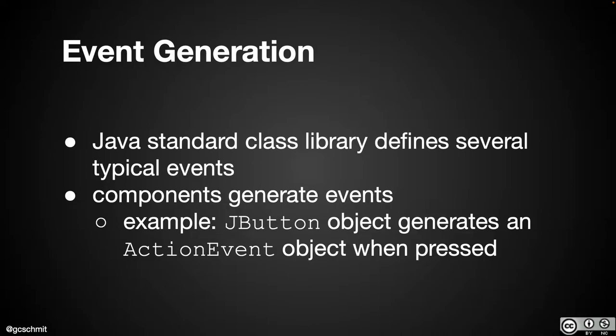The JButton class, which is part of the Java standard library and represents a button component, when the user clicks on it, the Java framework takes care of creating a new ActionEvent object. We simply interact with that event object — we don't have to create it, it's created for us. Events are generated by the Java framework; we simply respond to them. We'll see an example of that in just a second.